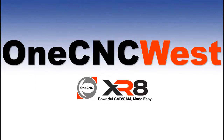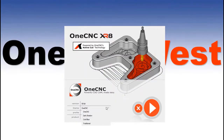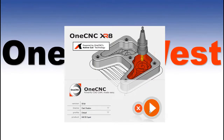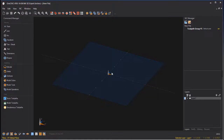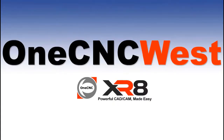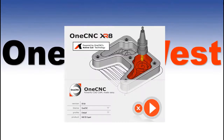If I were to launch 1CNC and click on Theme, there are four different themes to choose from. A theme is just a quick way to have different colors for the background and the menus. For example, if I select Dark Shadow and launch 1CNC, you can see the dark background and dark menus. Let's exit and try again — this time we'll use the default 1CNC theme.